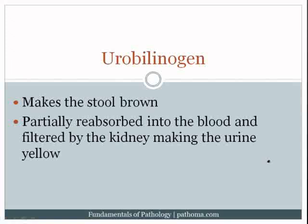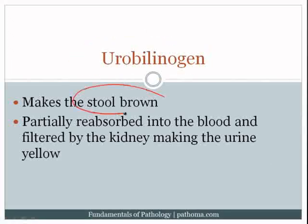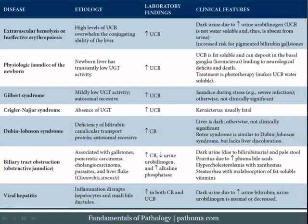When bile is released into the duodenum, the intestinal flora take the conjugated bilirubin present within the bile and convert it to urobilinogen. The urobilinogen then makes the stool brown and is partially resorbed into the blood, then filtered by the kidney, making the urine yellow. With this background in mind, we can now cover some of the causes of jaundice.